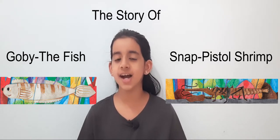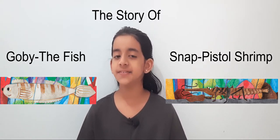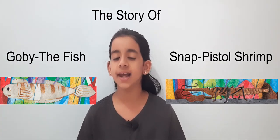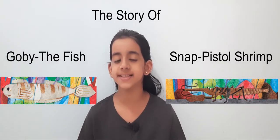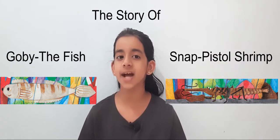Hello everybody, I am going to tell you the story of Gobi and Snap. I like them because they are best friends. Gobi and Snap, deep down in the blue ocean, lived Gobi and Snap. They were best friends, but they looked so different from each other.